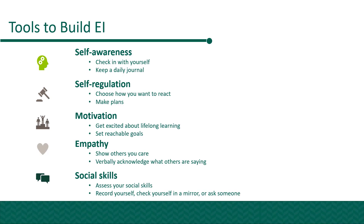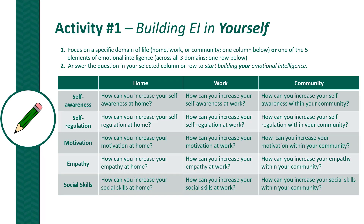Activity one: building EI in yourself. Notice the pencil on the left-hand side. I want you to focus on a specific domain of life — either home, work, or community, which are in the columns — or one of the five elements of emotional intelligence: self-awareness, self-regulation, motivation, empathy, and social skills, which go across the domains. Then answer the questions in your selected column or row to start building your emotional intelligence. For instance, if I wanted to focus on self-awareness, I could focus on it in home, work, or community. If I wanted to focus only on the work domain, I would address work in terms of all five elements. Simply pick a column or a row and answer the following questions.